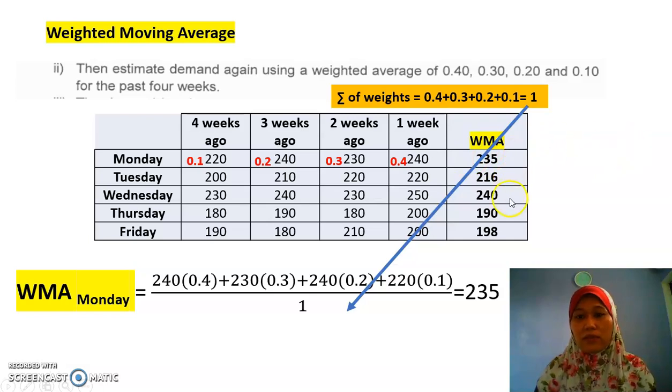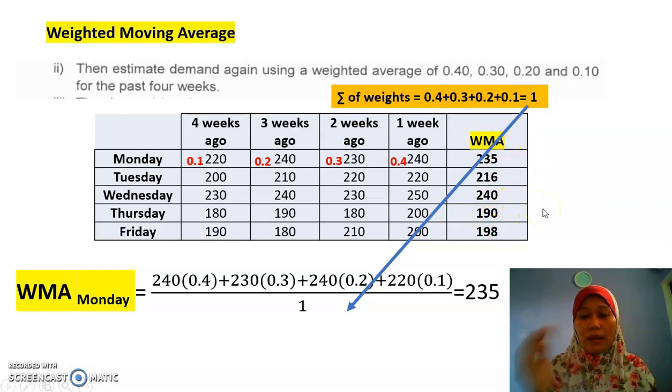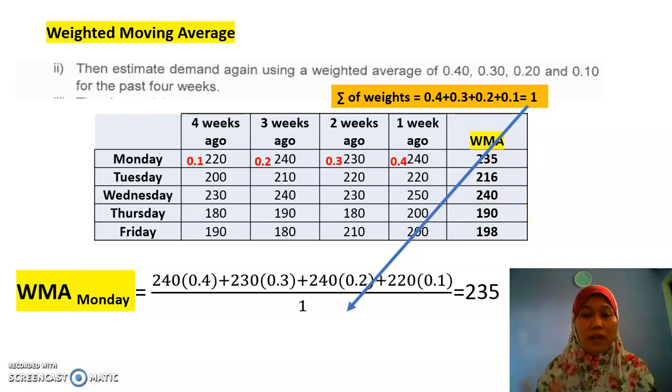Luckily the weights sum to 1, so dividing by 1 gives us 235 for Monday. Fill up for Tuesday, Wednesday, Thursday, and Friday the same way. In this case all results are round numbers, but if not, you have to round up. That answers part two.